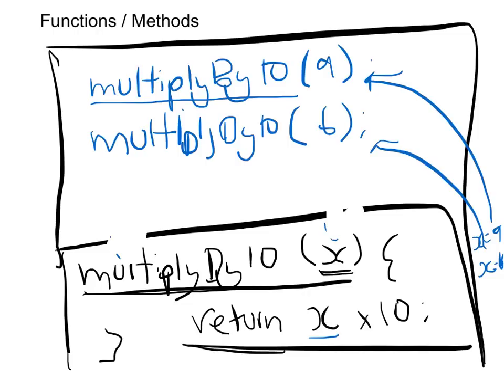That's very useful because it saves us from repeating ourselves. Instead of always writing out nine times ten, six times ten — which can become tedious — you just call one function. The function does the same thing every time, but you give it different values and it performs a different calculation and gives you what you want.